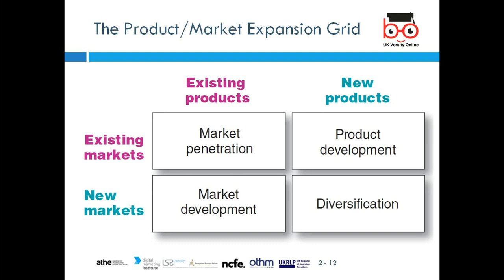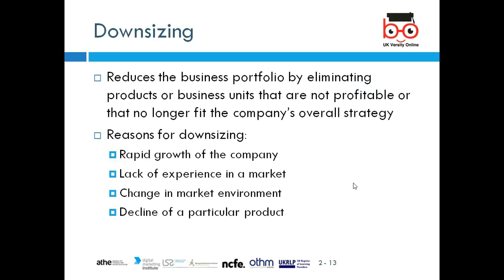The Ansoff Matrix is based on four strategies: diversification means totally new product in a new market; downsizing — also called right-sizing — means reducing the business portfolio by eliminating products. Reasons for downsizing include rapid company growth, lack of experience in the market, changes in the marketing environment, or decline in a particular product area.